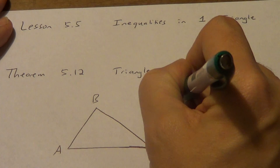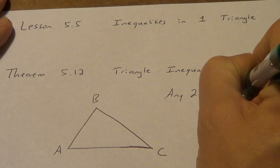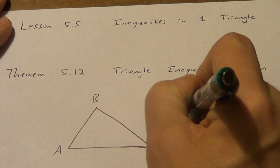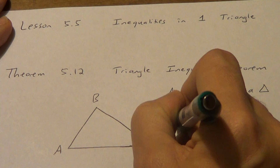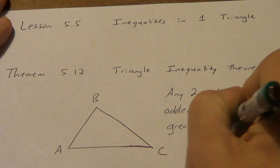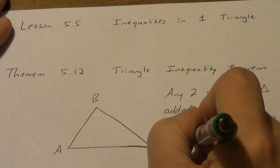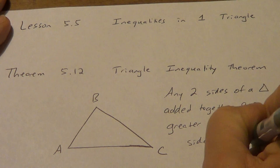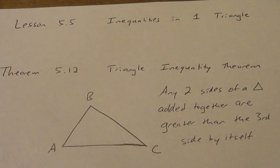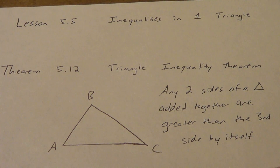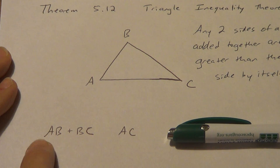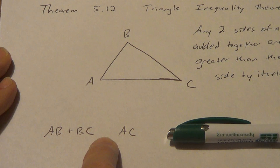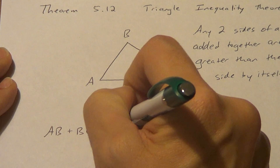Any two sides of a triangle added together are greater than the third side by itself. So if we've got AB plus BC, if I add AB and BC together, it's not going to equal AC. It's going to be greater than AC. So I'm going to put a greater than sign right here.